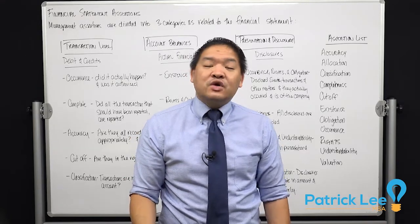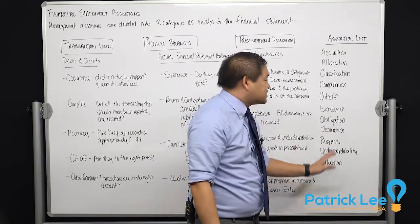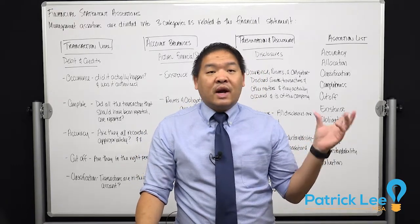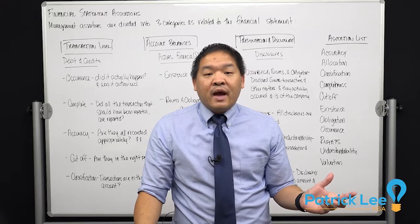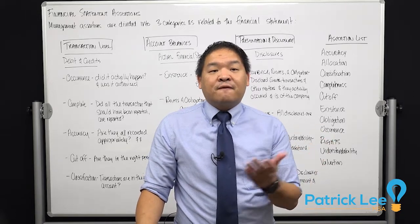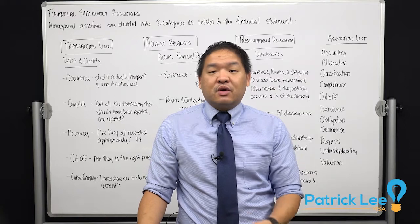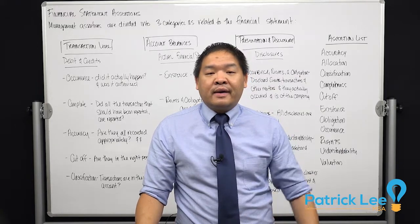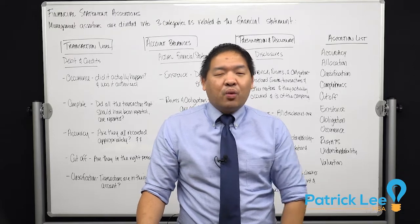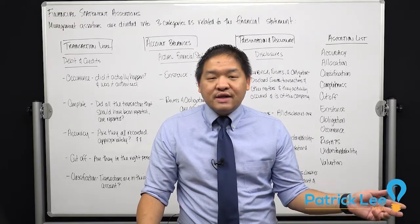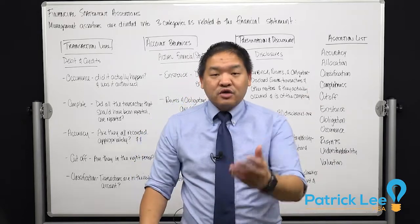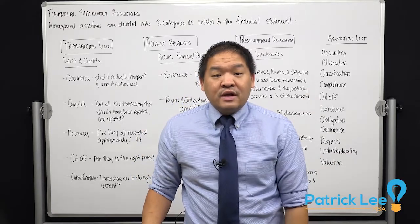These are all the assertions. You could write all of them down and keep them as a reference — so when you're asking what you're trying to test, you can find which assertion fits what you're trying to audit.